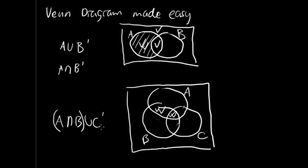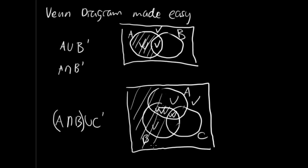Now we want to do the union C prime part. So I'm going to check everything that's in C prime — these four areas are C prime. Since this is a union, we're going to include everything that has been checked once, twice, or three times. So the result is going to be the outside and then this area, like this.